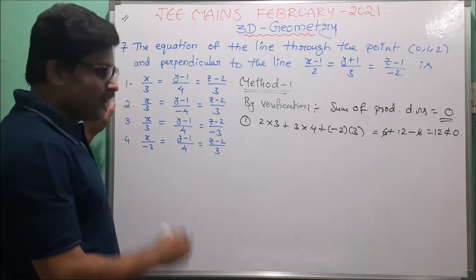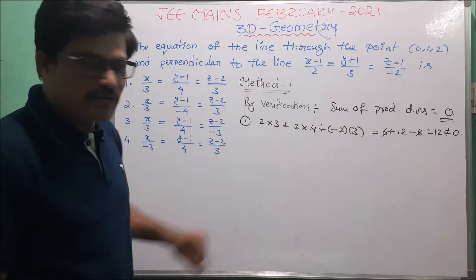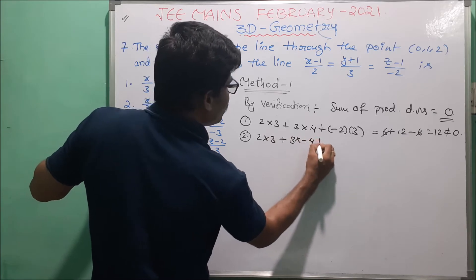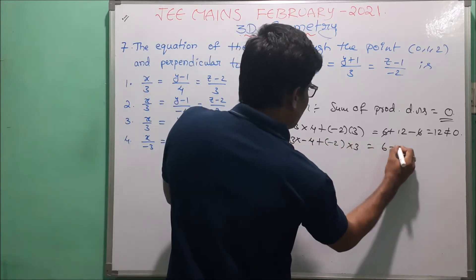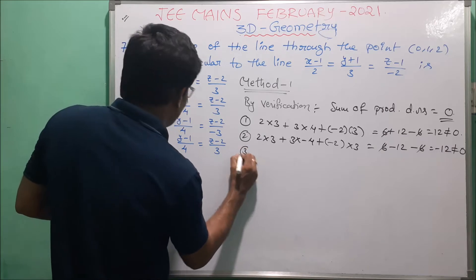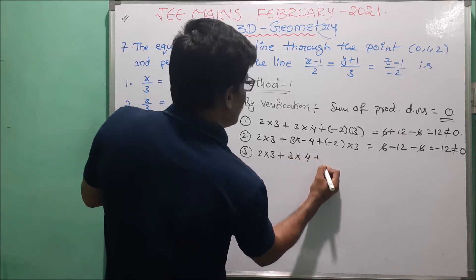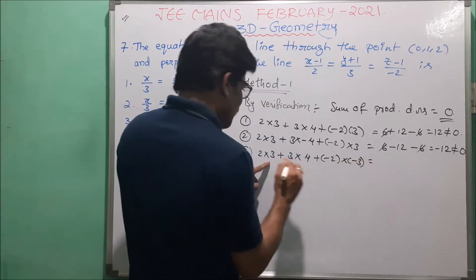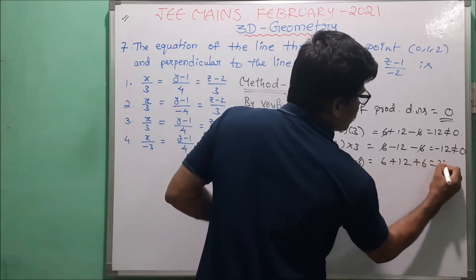For option 2, DRs (3, minus 4, 3): 2 into 3 plus 3 into minus 4 plus minus 2 into 3 equals 6 minus 12 minus 6 equals minus 12, not equal to zero. For option 3, DRs (3, 4, minus 3): 2 into 3 plus 3 into 4 plus minus 2 into minus 3 equals 6 plus 12 plus 6 equals 24, not equal to zero. Also not equal to zero.